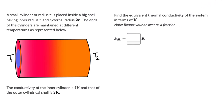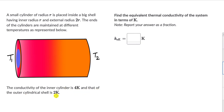Let's solve a couple of questions on equivalent thermal conductivity. For the first one, we have a small cylinder of radius R placed inside a big shell having inner radius R and external radius 2R. We can see the small cylinder in purple and the big cylinder outside of it in pink. The ends of the cylinders are maintained at different temperatures T1 and T2. The conductivity of the inner cylinder is 4K and that of the outer cylindrical shell is 2K. We need to figure out the equivalent thermal conductivity of the system in terms of K.